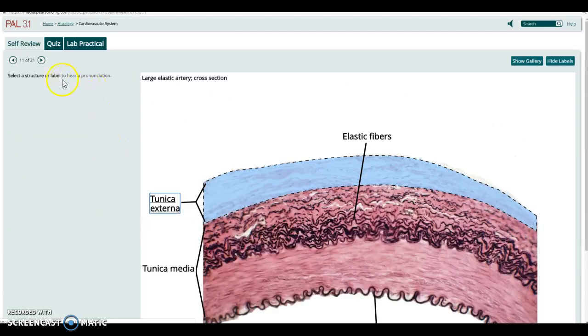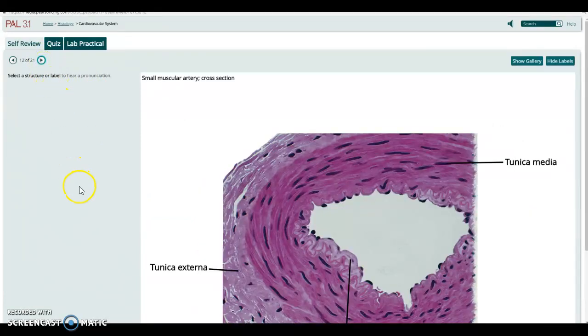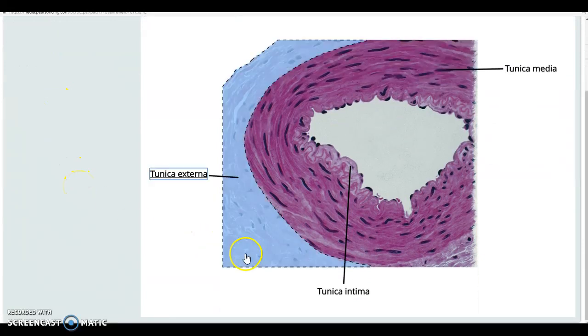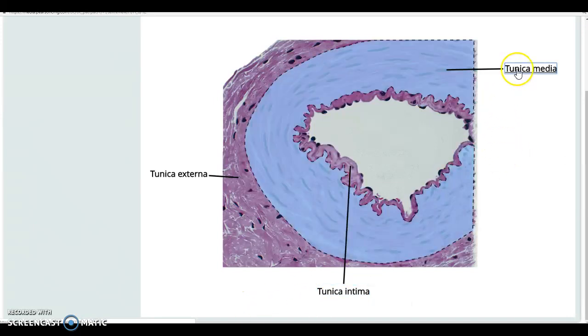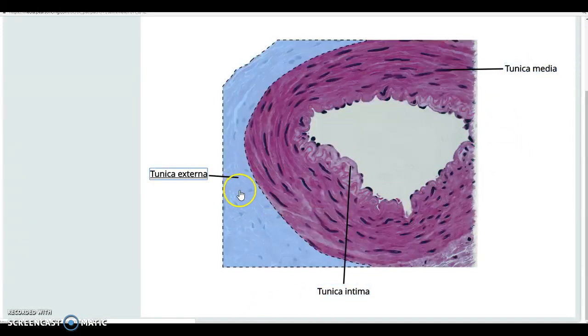And here we've got a much smaller artery, again, same layers, tunica intima, the internal epithelial lining, what we call the endothelium, the tunica media or the smooth muscle layer around it and the tunica externa.